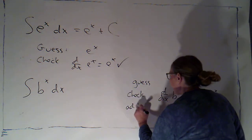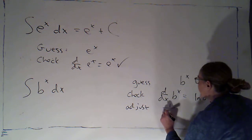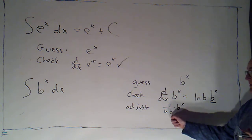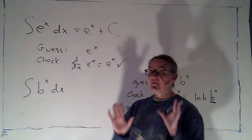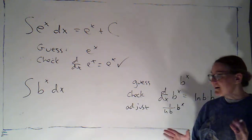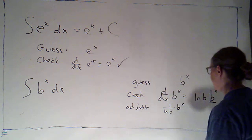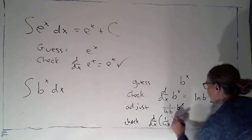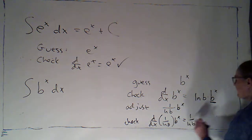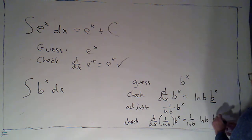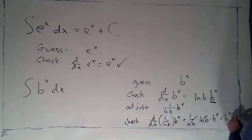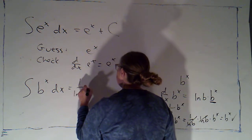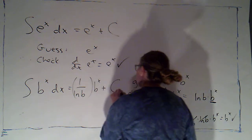I can adjust. I'm going to try 1 over the natural log of b times b to the x. This won't be 0, because the base isn't allowed to be 1, and 1 is the only number whose natural log would be 0. If I check by taking the derivative of 1 over the natural log of b times b to the x, I get 1 over the natural log of b times the natural log of b times b to the x. Those natural logs cancel, and I just get b to the x.